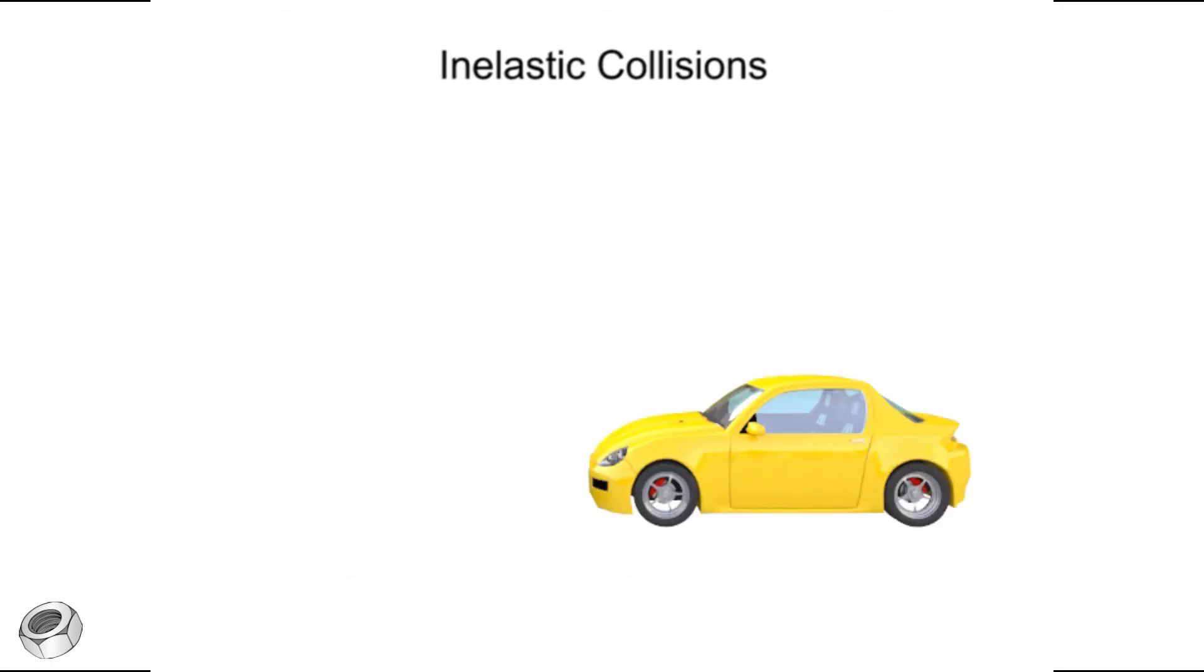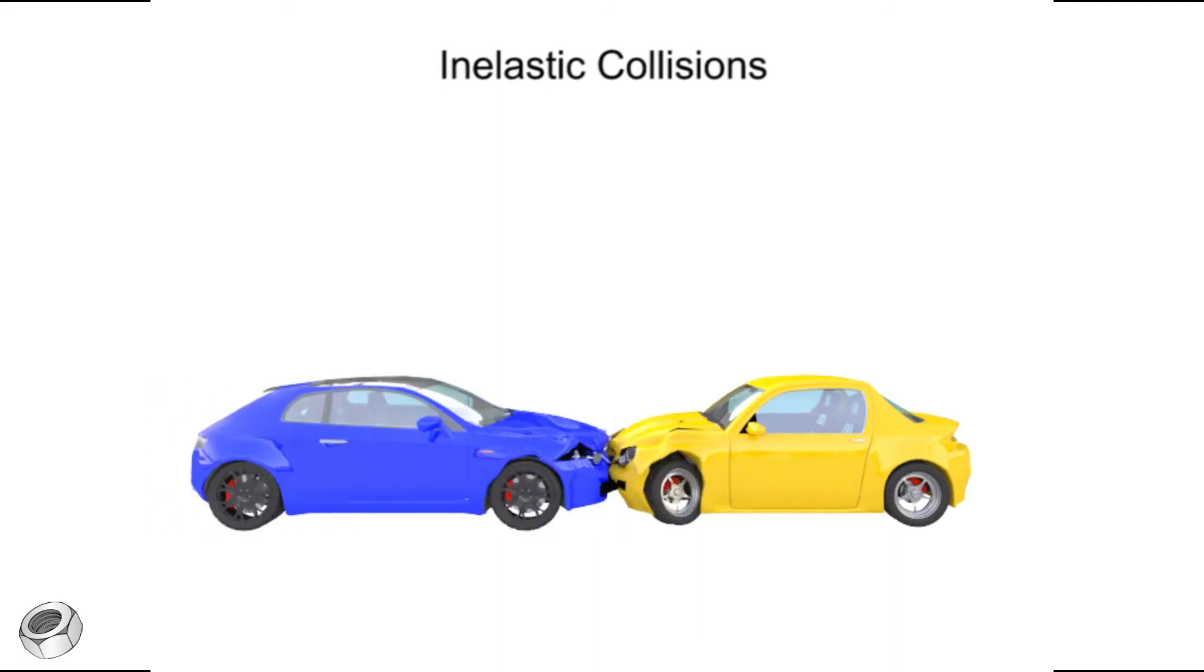A clear example of an inelastic collision is a car crash. In order to understand the conservation of momentum in this example, we'll imagine a car crash taking place in a world where road friction and air resistance have no bearing on the system.